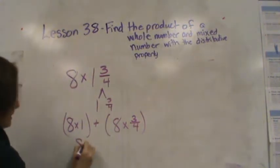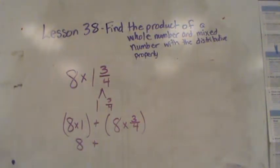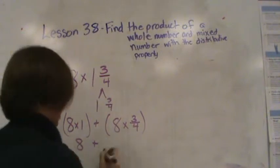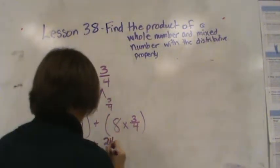8 times 1 is 8 plus, if I did 3 fourths eight times, let's see, I would have 3 fourths, 6 fourths, 9 fourths, 12 fourths, 15 fourths, 18 fourths, 21 fourths, 24 fourths. So I have 8 and 24 fourths.